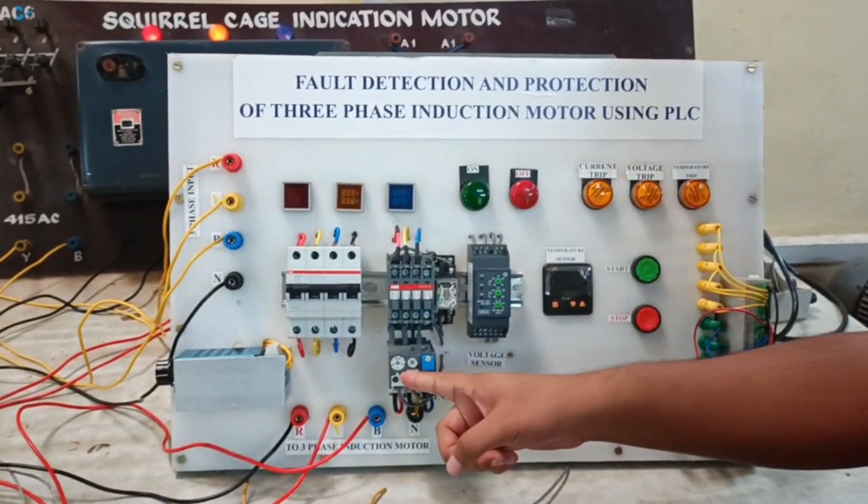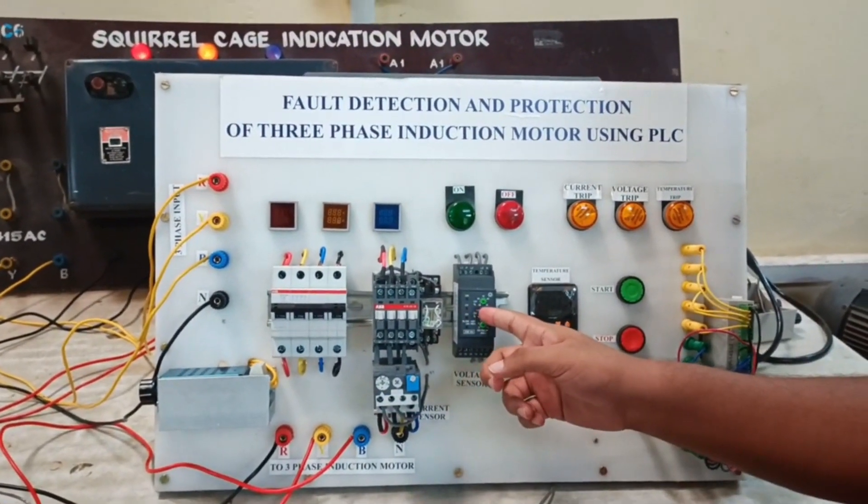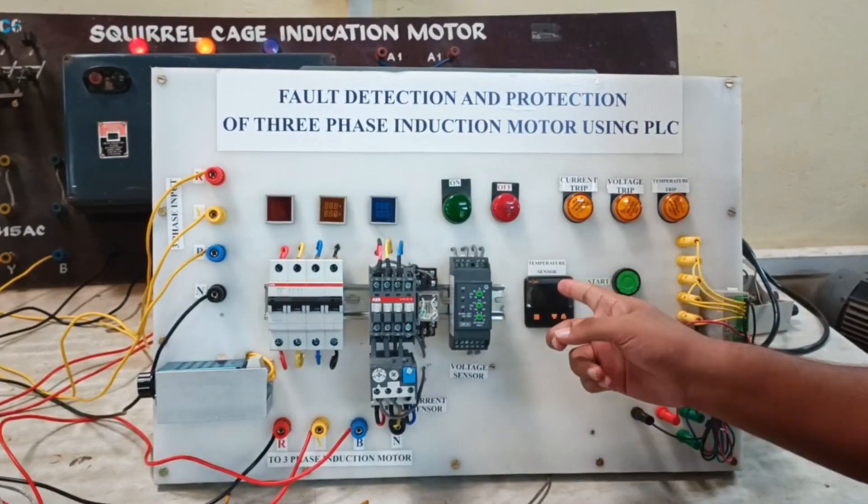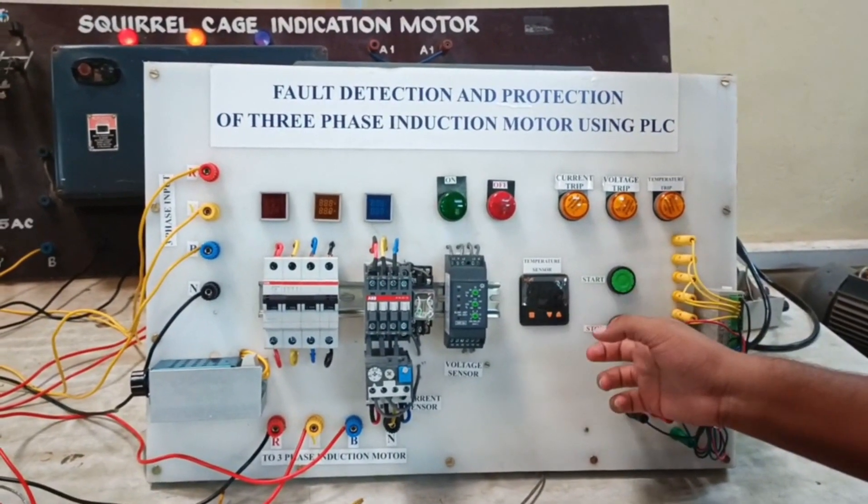So these inputs are, one is to the overload relay, one is to the over voltage, under voltage relay, one is to the temperature sensor and the others are for the start and stop buttons.